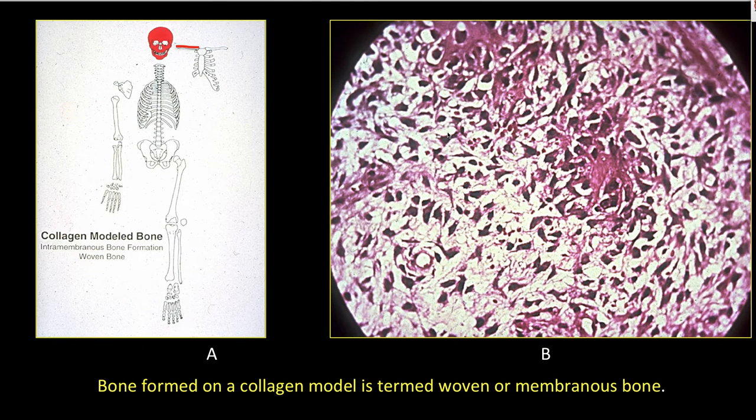Slide A depicts those bones that arise through woven bone formation de novo in the embryo: facial bones, skull, and clavicle.